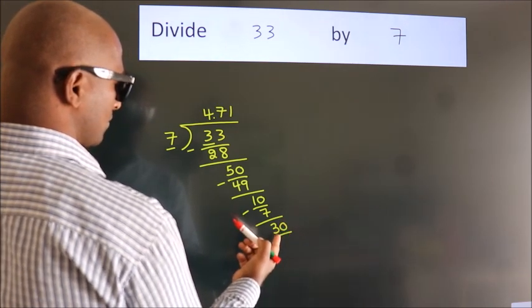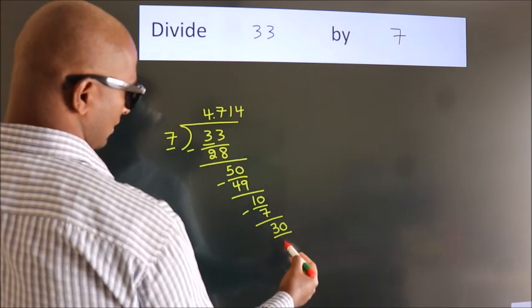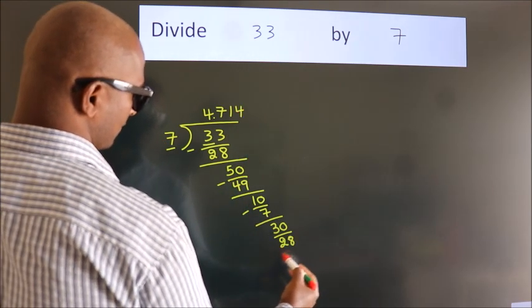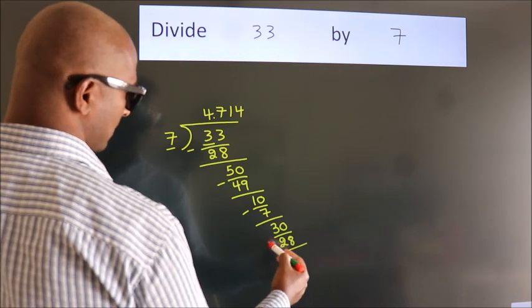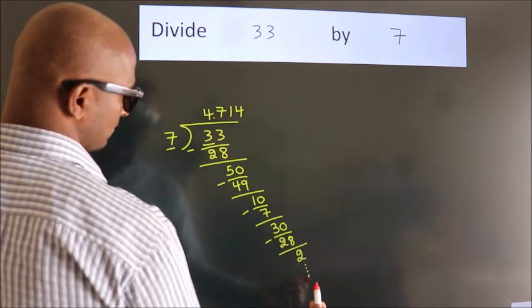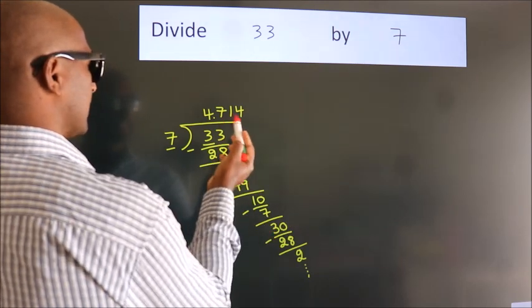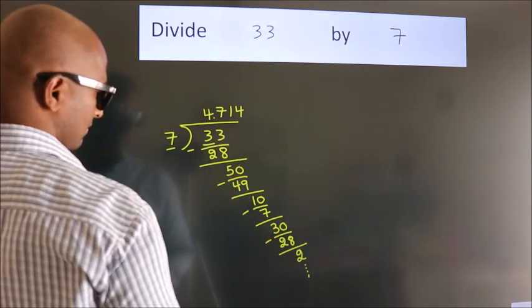A number close to 30 in the 7 table is 7 fours, 28. Now we subtract. We get 2, and the division continues. It is enough if we do up to 3 decimal places: 4.714.